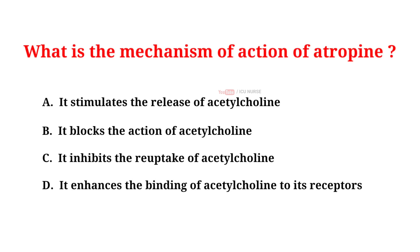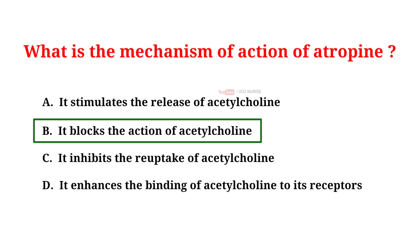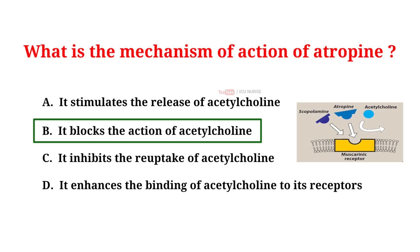What is the mechanism of action of atropin? A. It stimulates the release of acetylcholine, B. It blocks the action of acetylcholine, C. It inhibits the reuptake of acetylcholine, D. It enhances the binding of acetylcholine to its receptors. The correct answer is B. It blocks the action of acetylcholine. Atropin is an anticholinergic agent that blocks the action of acetylcholine, a neurotransmitter in the body.